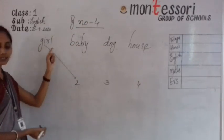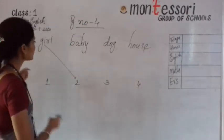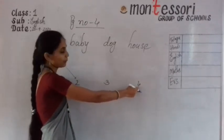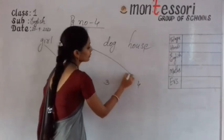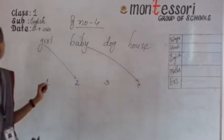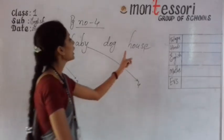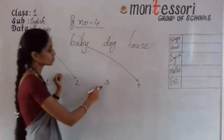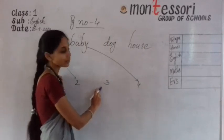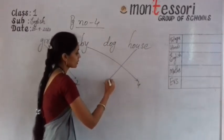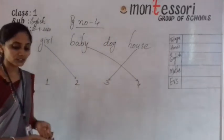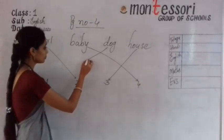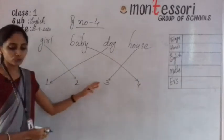Next one is baby. Where is baby? That is related to picture number four. B-A-B-Y baby, picture number four. Next: house, H-O-U-S-E — it is related to picture number three. Next: dog, D-O-G — it is related to picture number one. You have to match it.